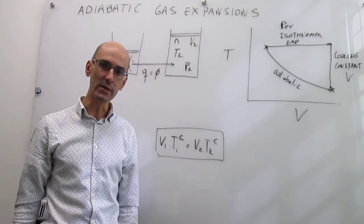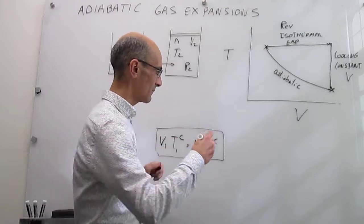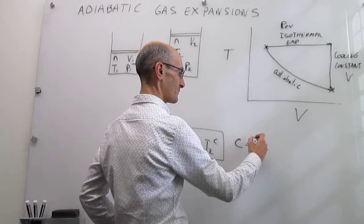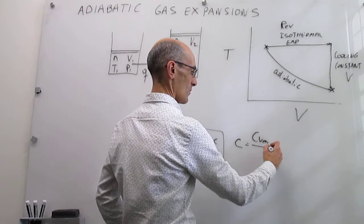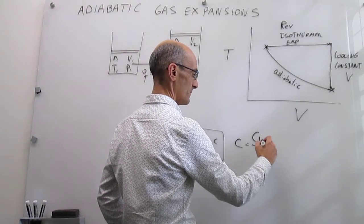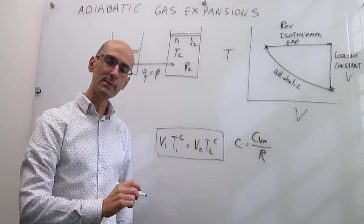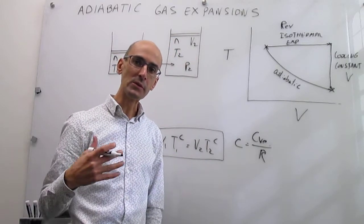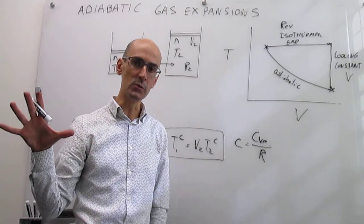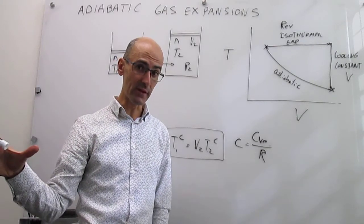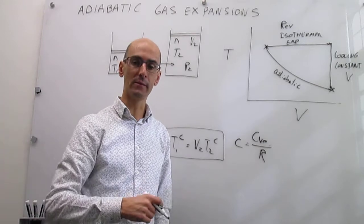What that C is, is just a ratio of the heat capacity at constant volume over R. What we are going to be doing in this video here is try to find a similar relationship but considering the change in pressure and volume. What is the relationship between the initial pressures and volumes of the gas and then the final pressure and volume?